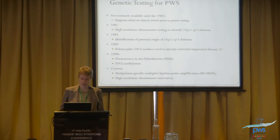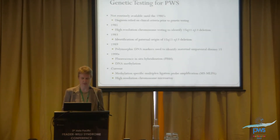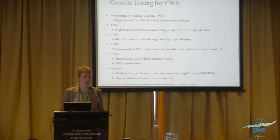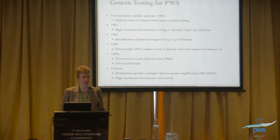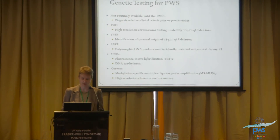Genetic testing — a brief history. It was not routinely available until the late 1980s and early 1990s; prior to that we relied on clinical criteria for diagnosis. In 1981, high-resolution chromosome testing identified the deletion. In 1983 they identified the deletion was of paternal origin. In 1989, polymorphic DNA markers identified UPD. In the 1990s, FISH and DNA methylation were used. Currently, we used two tests: methylation-specific multiplex ligation probe amplification, or MS-MLPA, and high-resolution chromosome microarray.